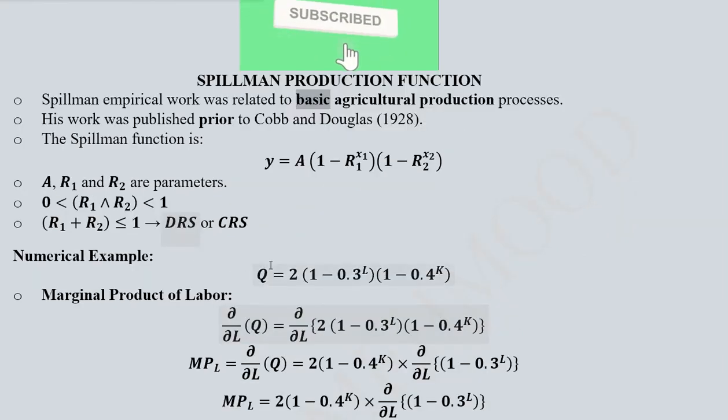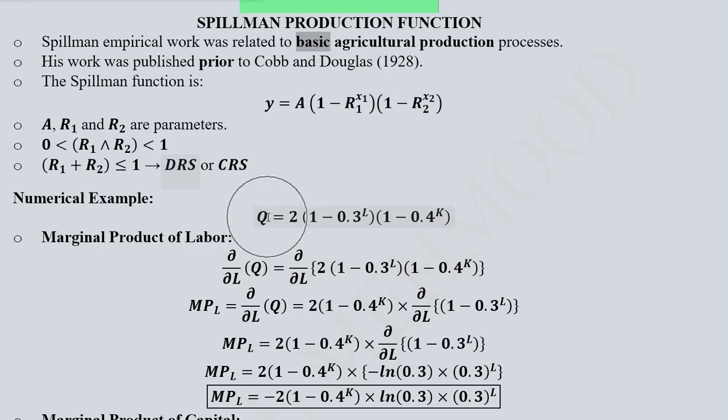Let's talk about a numerical example. Here we have output Q, we have labor L, we have capital K, and in place of A we have 2, in place of R₁ we have 0.3, and in place of R₂ we have 0.4.